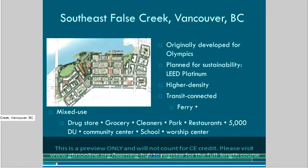The first case study we'll look at is the Southeast False Creek development in Vancouver, British Columbia. The neighborhood was designed around the 2010 Olympic Village, and the planners based the project in sustainability from the start. The project began in 2006, and in 2007 became only the second project in the world to earn LEED Platinum status. It is built on a former industrial site that had become a source of blight for the neighborhood, with a projected date of full completion in 2020.